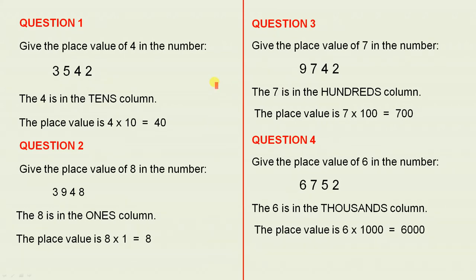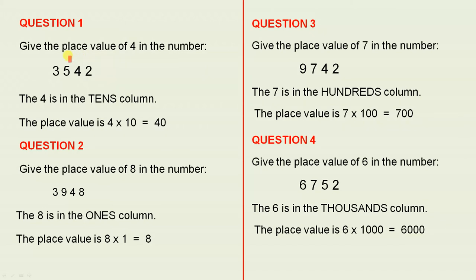Question 1. Give the place value of 4 in the number 3542. If you remember from previous lessons, this column is the ones column, the tens column, the hundreds column, and the thousands column. So the 4 is in the tens column. The place value is 4 times 10, which equals 40.